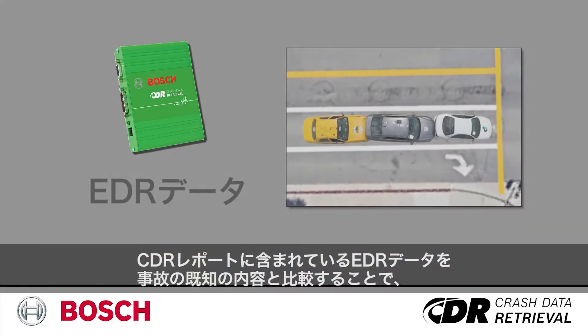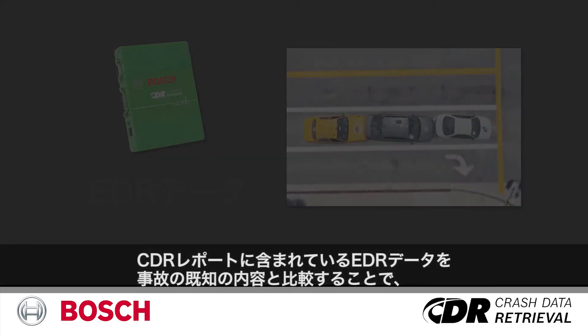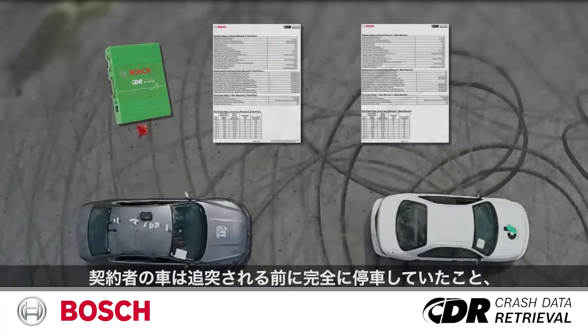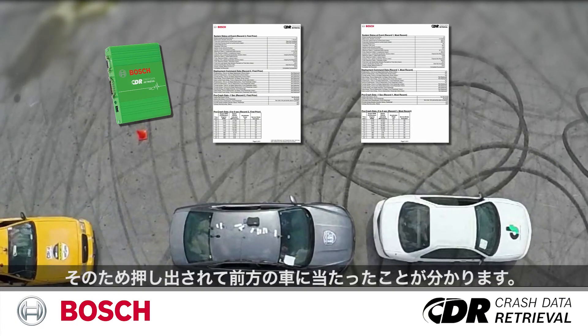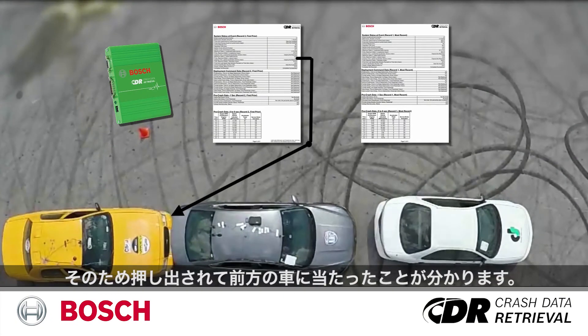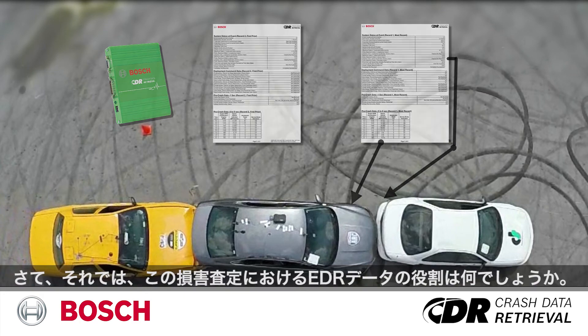Comparing the EDR data contained in the CDR report with the known details of the accident clearly indicates that your insured had come to a complete stop, was struck from behind, and was propelled into the car in front of it.